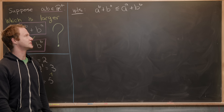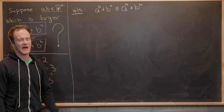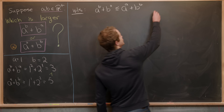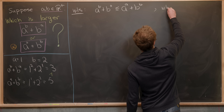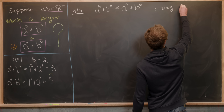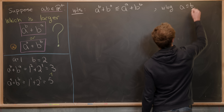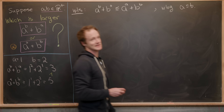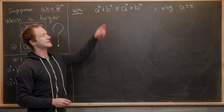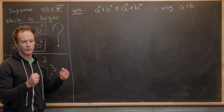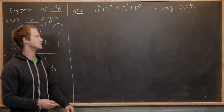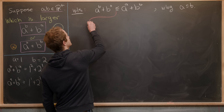Since there's some nice symmetry in terms of A and B, we might as well assume that A is less than or equal to B. Without loss of generality, we're assuming A is less than or equal to B. Now we'll take this inequality and break it into two equivalent inequalities that are a little bit easier to deal with.